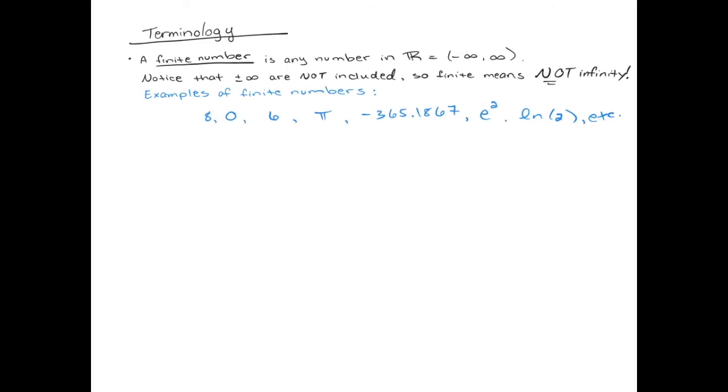Typical examples include the number eight, the number six, zero for example. How about pi? Pi is just a number, it's like 3.14 whatever. Negative 365, e squared. Remember e is just a number as well, it's like 2.718, et cetera. Natural log of two, that's like 0.69 or something like that. These are all examples of constants that are not infinity, that lie on the real line, and they're all finite numbers.